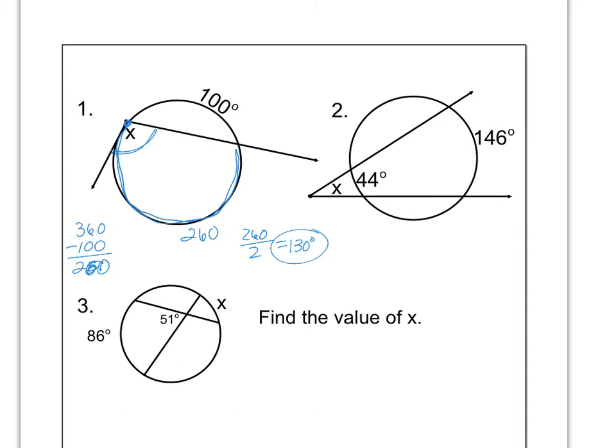For number two, this angle is outside of the circle. So you should take big arc minus little arc and divide by two. So it's going to be x equals 146 minus 44, divide by two. And I think that is 51 degrees.